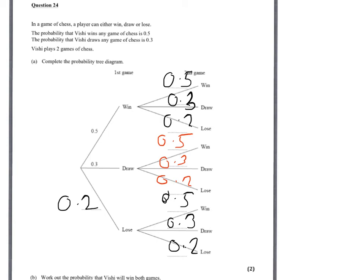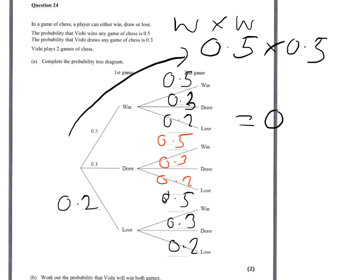Now, the probability that Vinay wins both games, we've got to go this route, win and win. And for probability, we use multiplication when we use the and law, so it's 0.5 times 0.5. So the answer will be 0.25 for Vinay winning both games.